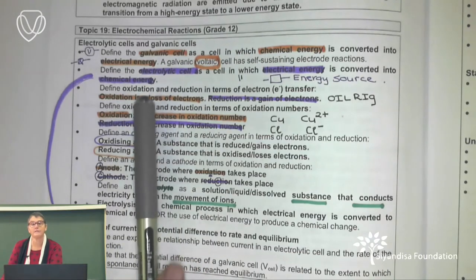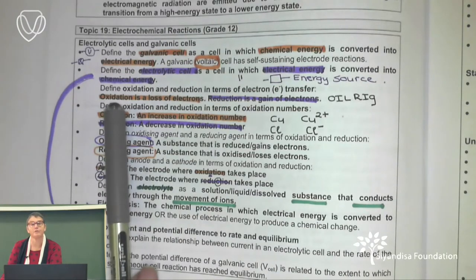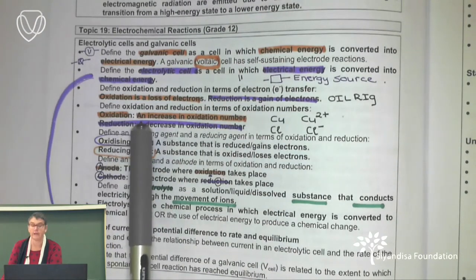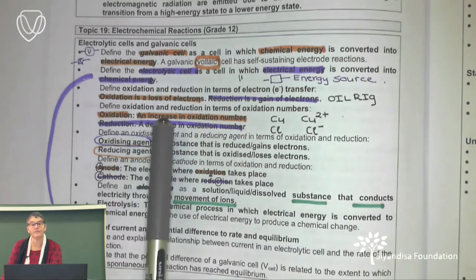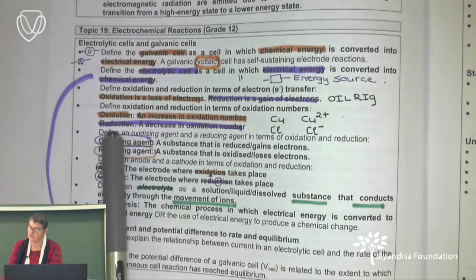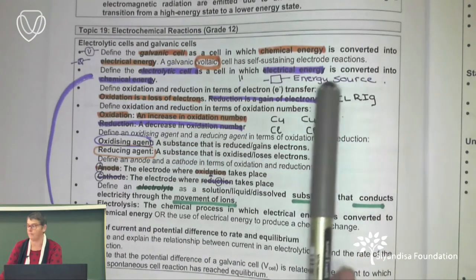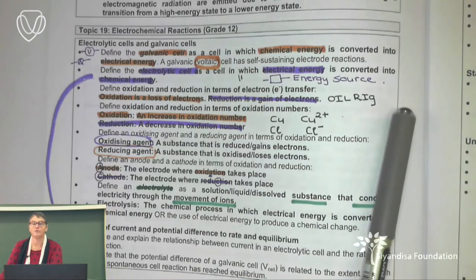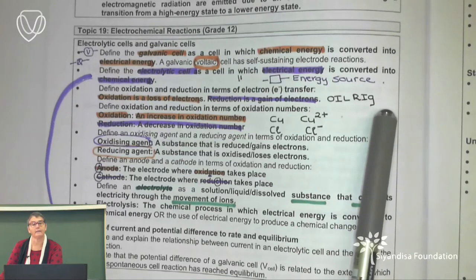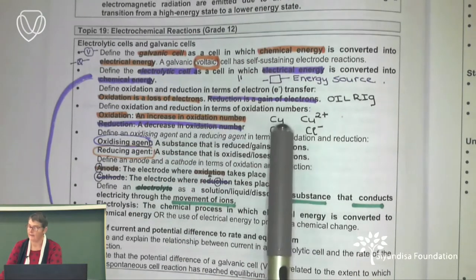Now our definitions. We need to know what oxidation is — we need to define it as a transfer of electrons, and also as an increase in the oxidation number. We need to define reduction as a decrease in the oxidation number. The crib note: OIL RIG — oxidation is loss, reduction is gain. Oxidation is an increase in oxidation number. For example, Cu has oxidation number zero, and it became Cu²⁺ — so that is oxidation.